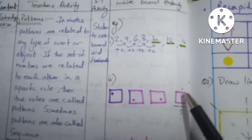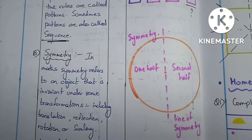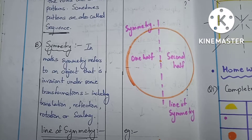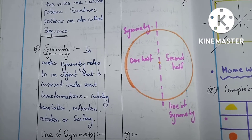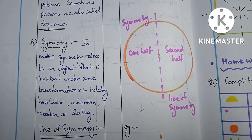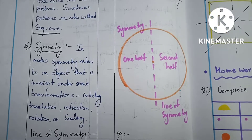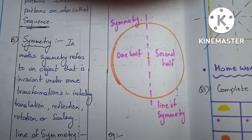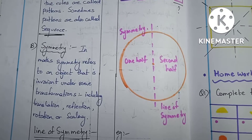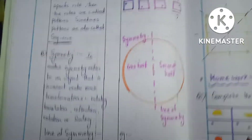Similarly we come to symmetry. Symmetry is something in maths where the object is invariant under it. It basically includes translation, reflection, and rotation. Over here you can see in this picture the circle has got reflection as well as rotational symmetry.